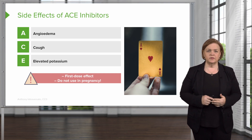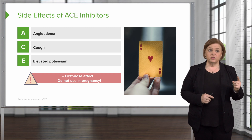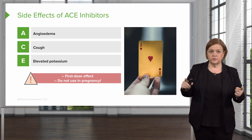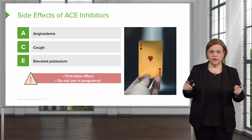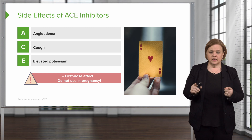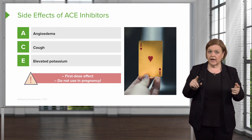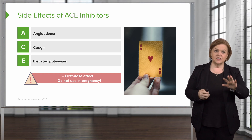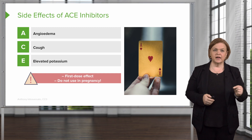Why do we care about elevated potassium? Because I don't want to give a patient an ACE inhibitor who's also on another medication that elevates potassium, like a potassium-sparing diuretic. Keep in mind: if a medication already has one side effect, I don't want to give them another medication that also has that side effect. There's a key slide for ACE inhibitors — make sure you come back and review that later.